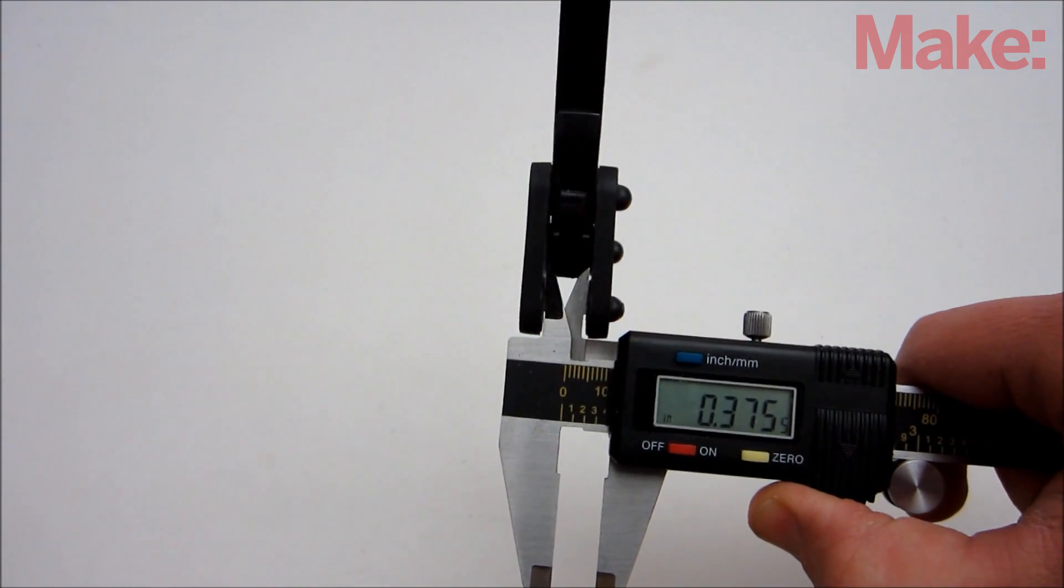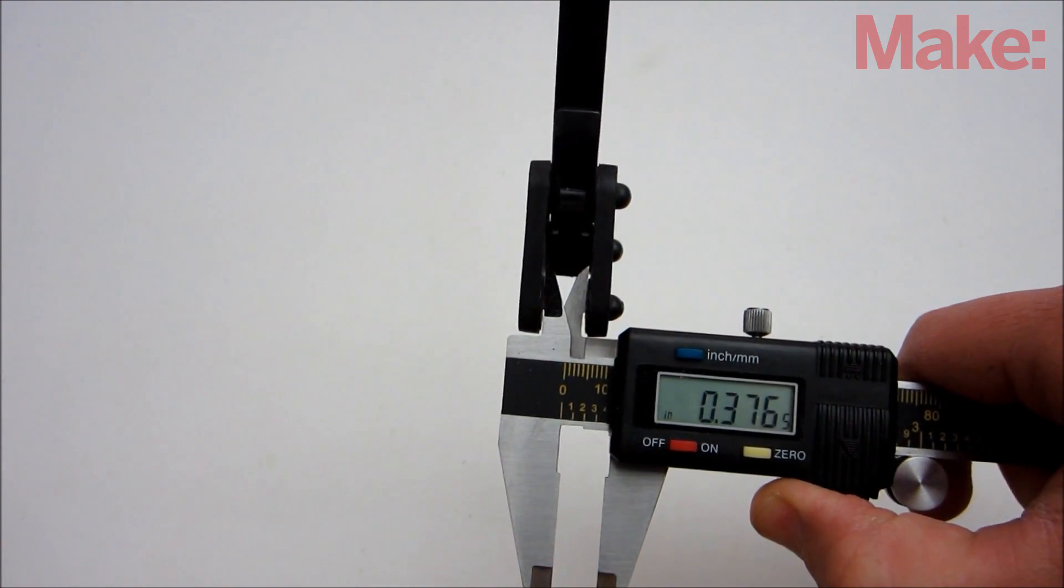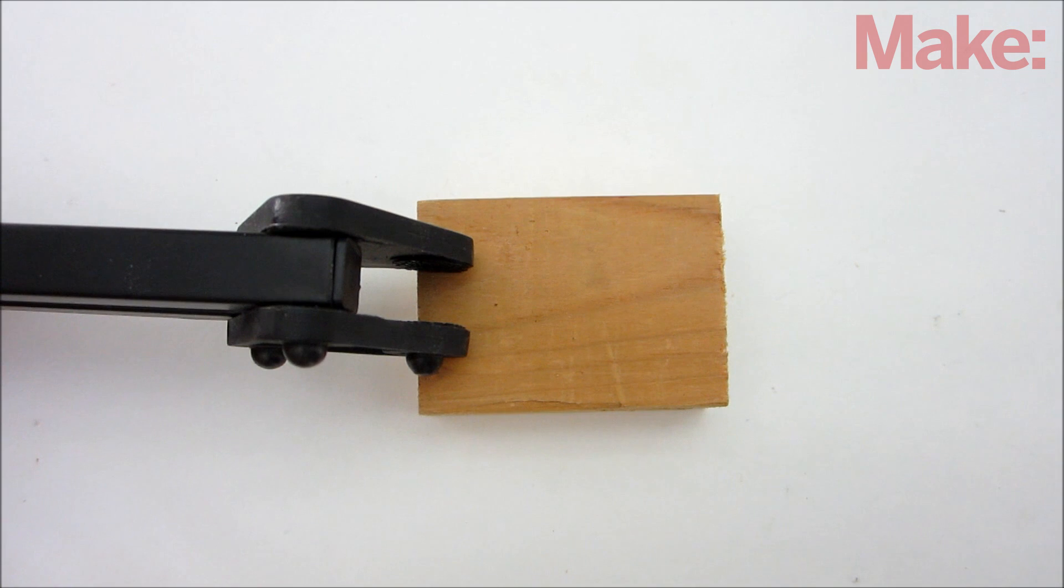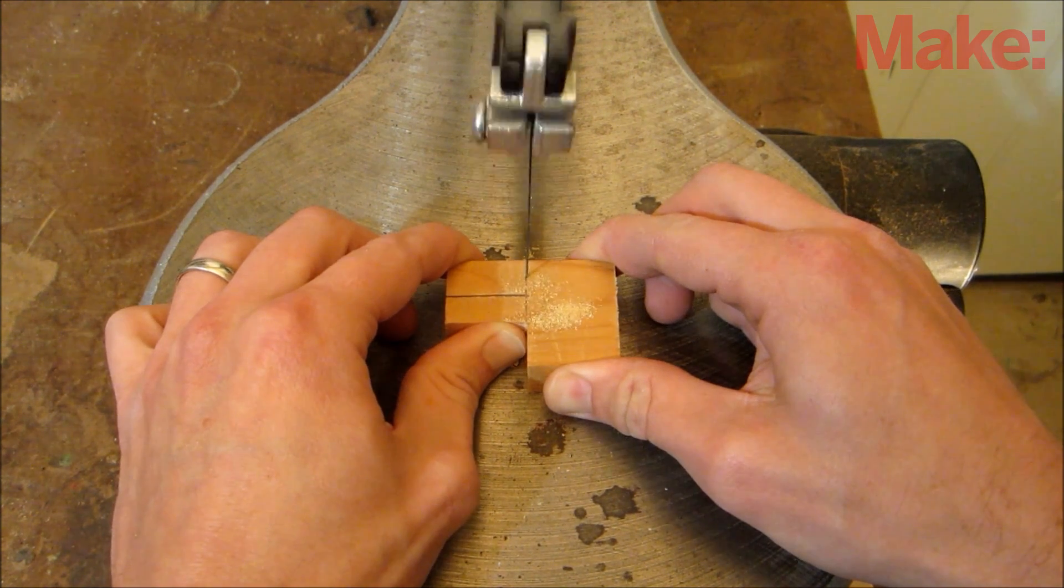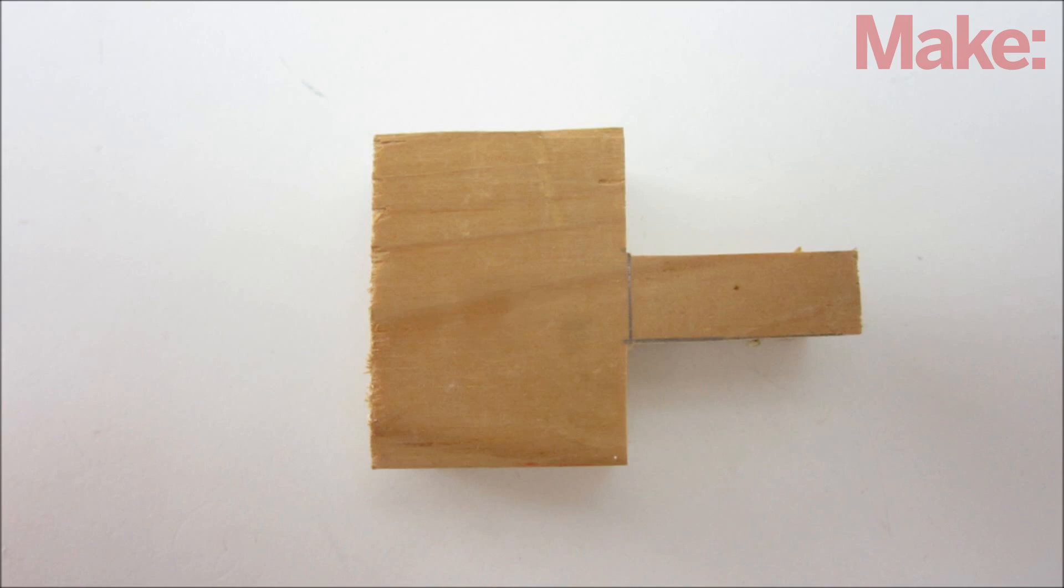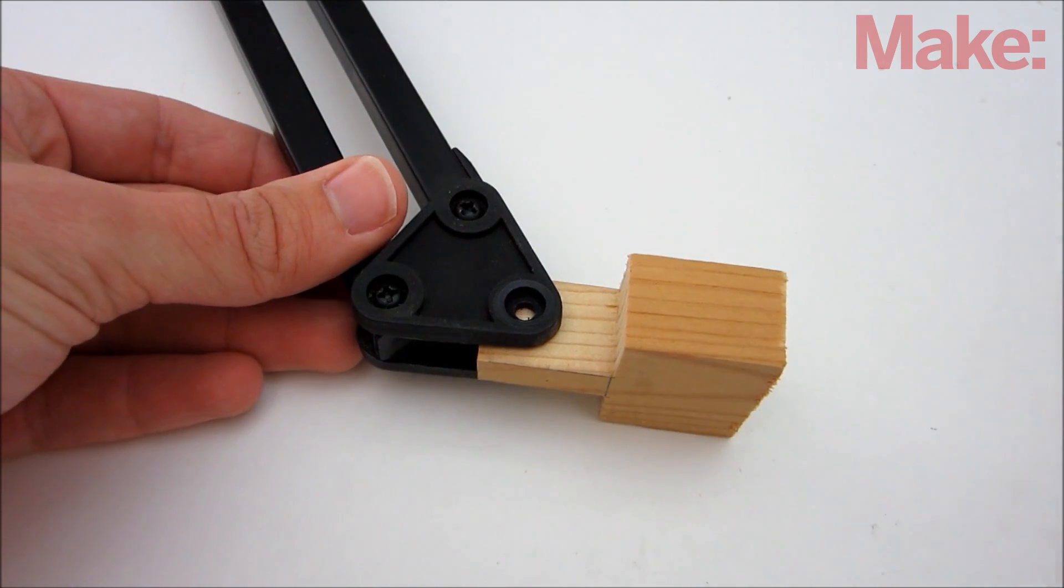Start by measuring the spacing between the plates on the stand. On mine it was about 3/8 of an inch. You need to cut your mounting bracket so that part of it can fit between the plates. So I marked off a section on one end that was 3/8 of an inch wide and about an inch long, then I cut it out with the scroll saw.